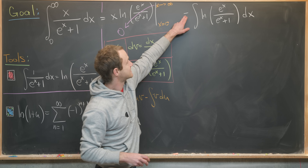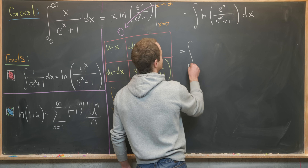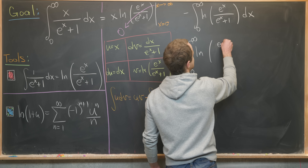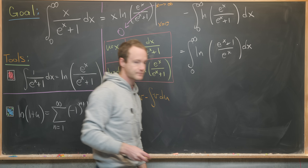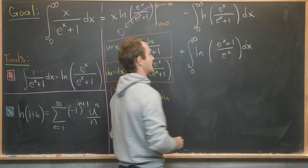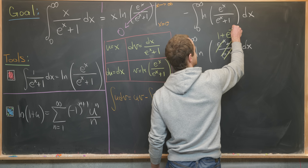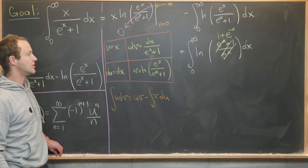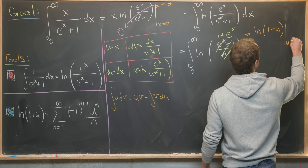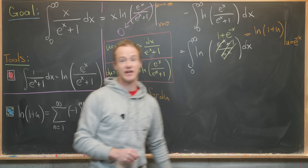We take the minus sign inside the natural log to take the reciprocal of the argument, giving us the integral from zero to infinity of the natural log of e to the x plus one over e to the x dx. We can simplify inside the log by canceling: e to the x plus one over e to the x becomes one plus e to the minus x. Notice this integrand is exactly ln of one plus u with u evaluated at e to the minus x.